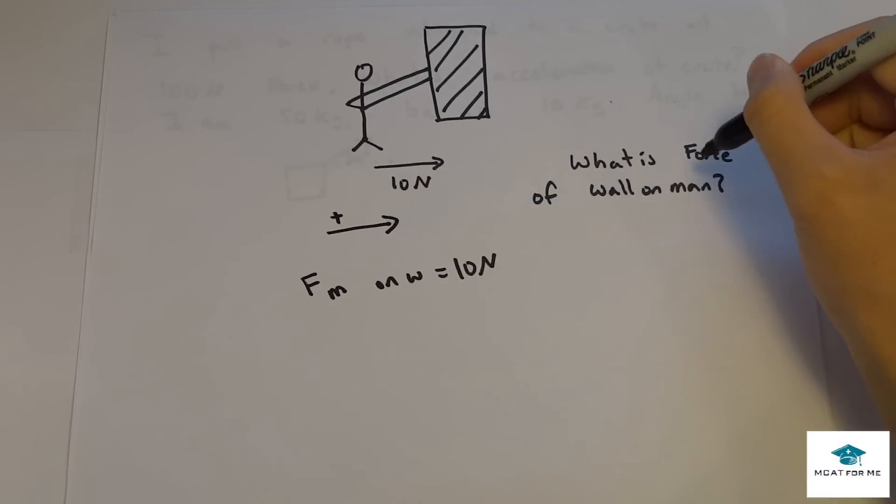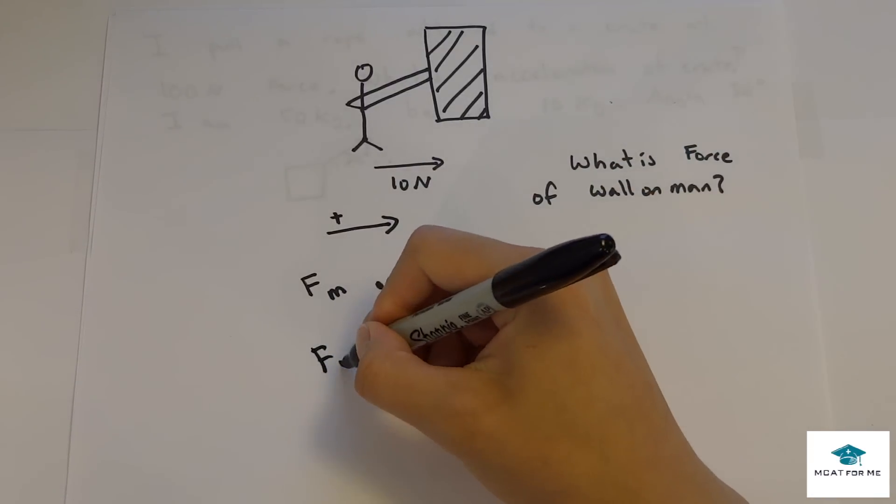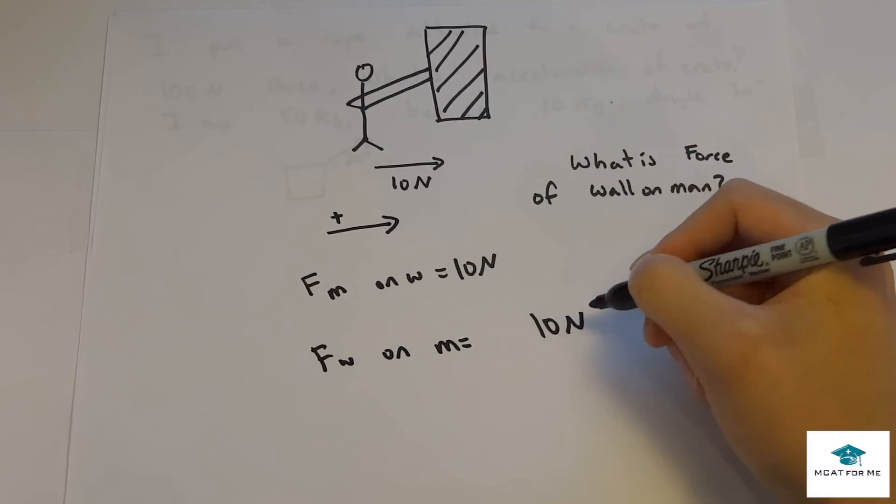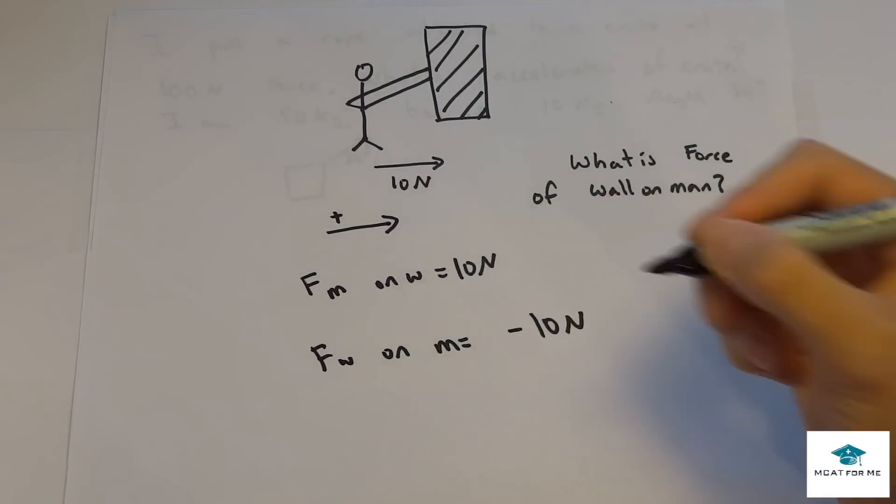Now it's asking what is the force that the wall exerts on the man? So the force of the wall on the man, well, we know it's 10 newtons, but we know it's in the opposite direction. So we know it's negative.